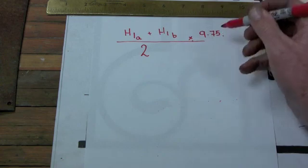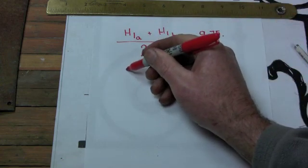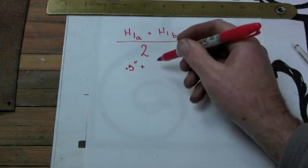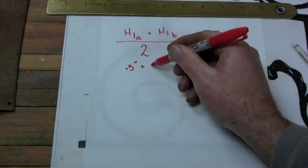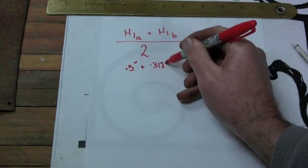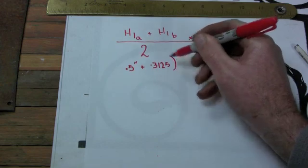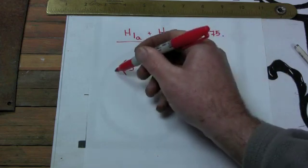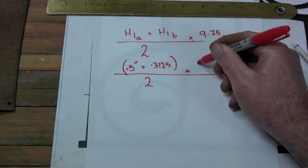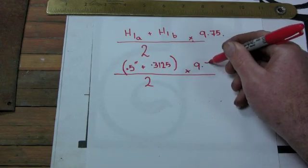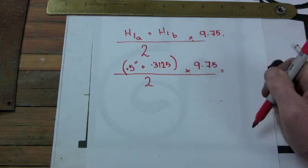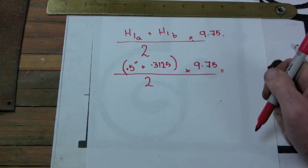So let's plug some other numbers in here. H1A was point five or half an inch. I'm going to add that to H1B, which was five-sixteenths, so point three-one-two-five. Put that in brackets, because we want to solve that first. Put everything over two, and multiply that by nine-point-seven-five. Luckily I have a calculator right here, so I'm going to plug in some numbers and come back to you with a number.